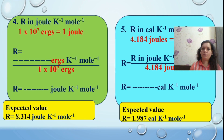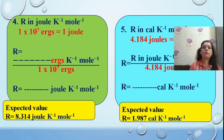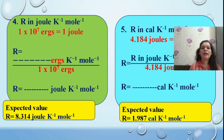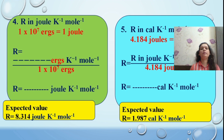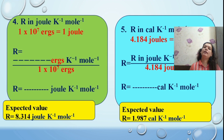To obtain R in joules per Kelvin per mole, use the relation: 1 joule = 1 × 10⁷ ergs. Divide your value of R in ergs/K/mol by 1 × 10⁷ to get R in joules per Kelvin per mole. To convert to calories per Kelvin per mole, use the relation 4.184 joules = 1 calorie. Divide R in joules/K/mol by 4.184 to obtain the molar gas constant in calories per Kelvin per mole.